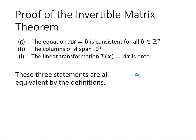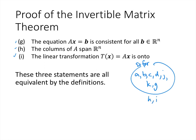So far, A, B, C, D, J, K, and G are all equivalent. Now G, H, and I — the equation Ax equals B is consistent for all B, the columns of A span Rⁿ, and the linear transformation T(x) equals Ax is onto — all three of those statements are the same. We proved this when we talked about linear transformations being one-to-one and onto. Since G is already in our equivalence chain, H and I are equivalent to G, and therefore equivalent to everything else.